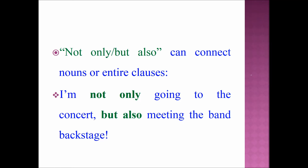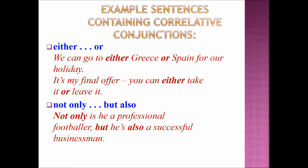Now let's see some more example sentences containing correlative conjunctions. EITHER/OR examples: 'We can go to either Greece or Spain for our holiday.' 'It's my final offer — you can either take it or leave it.'